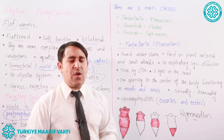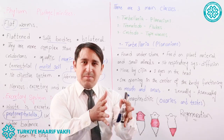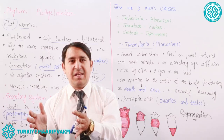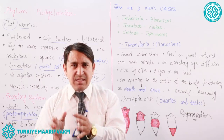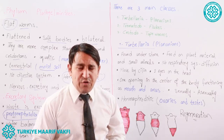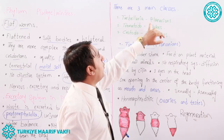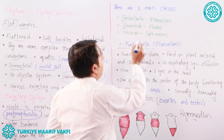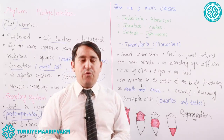Now we come to the classes of Platyhelminthes. We have three classes in this phylum. The first class is Turbellaria, or planarians. The second class is Trematoda, or flukes. The third class is Cestoda, or tapeworms. We will study them step by step.